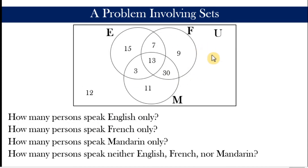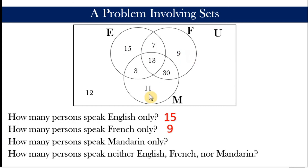Let us now answer the questions using the completed Venn diagram. English only: 15. French only: 9. Mandarin only: 11. People who speak neither of the three languages — those outside all three subsets — is 12. And we are done. That is a sample problem involving sets. I will see you in the next video.